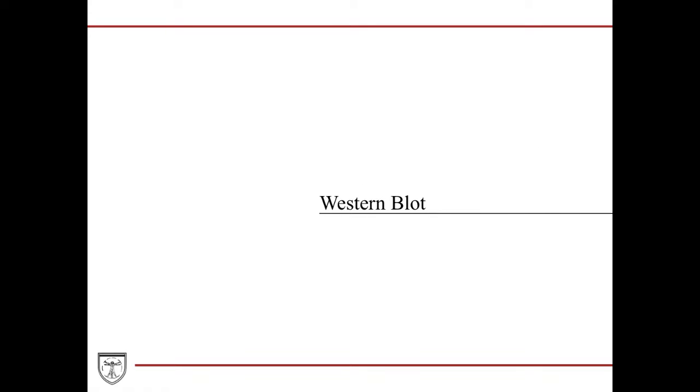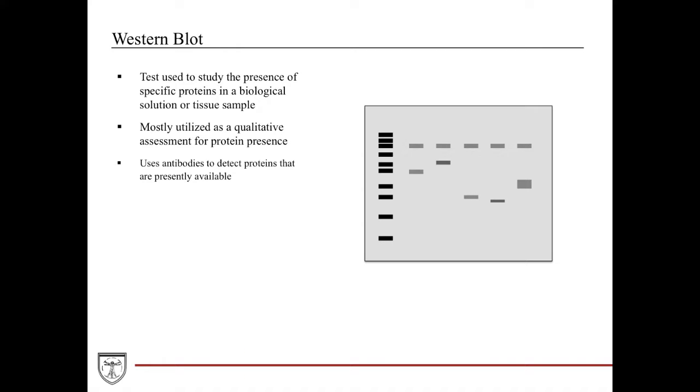First, we're going to discuss what the Western blot is. The Western blot is a test that's used to study the specific presence of protein. It's more of a subjective test, but it can be objectified, and it usually tests biological samples or tissue samples that are broken down.